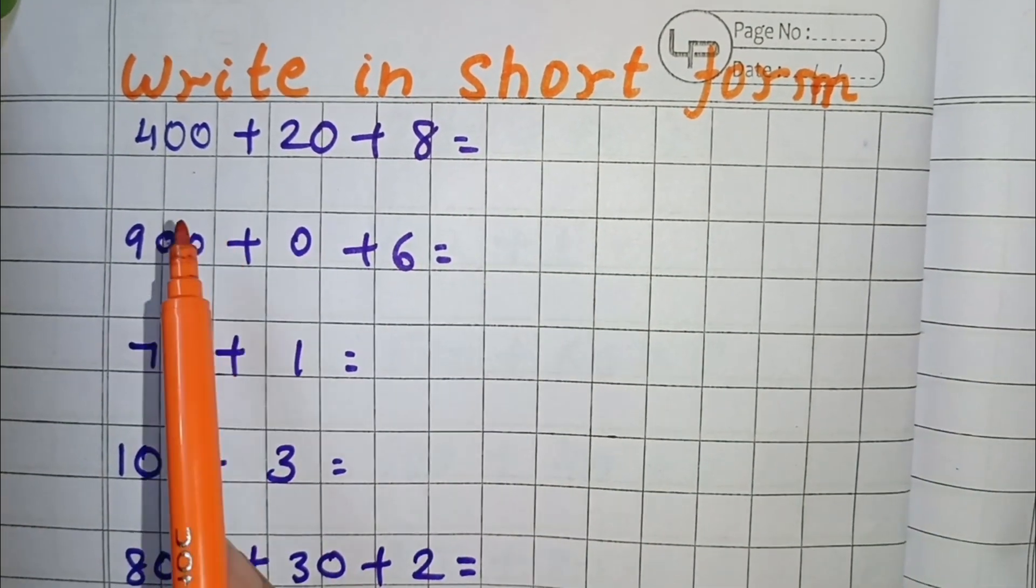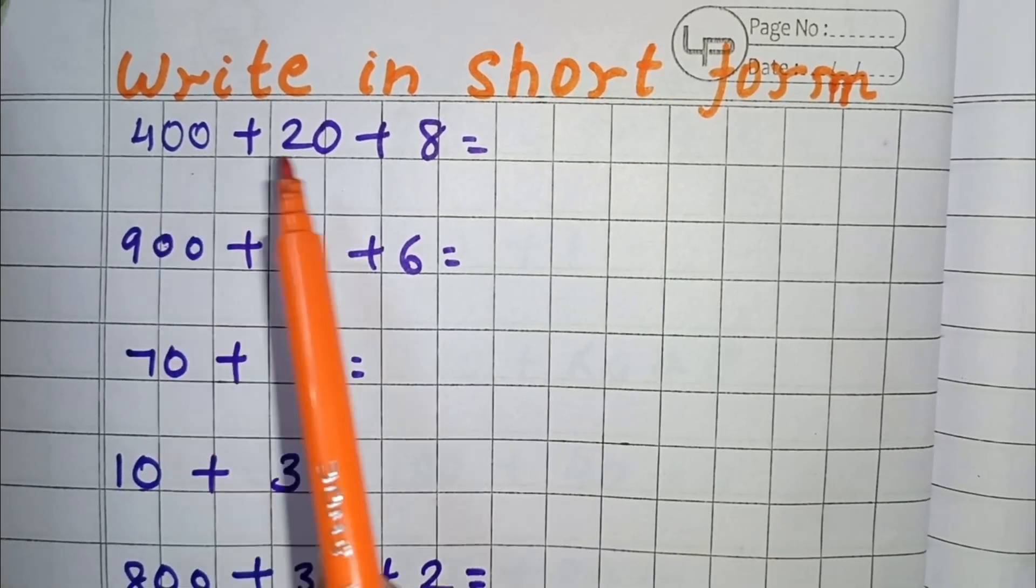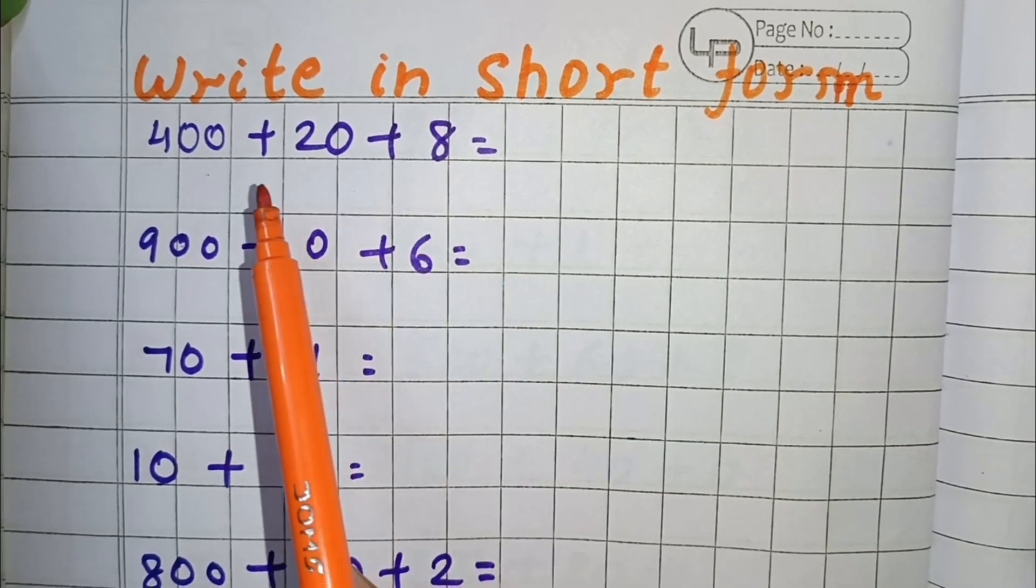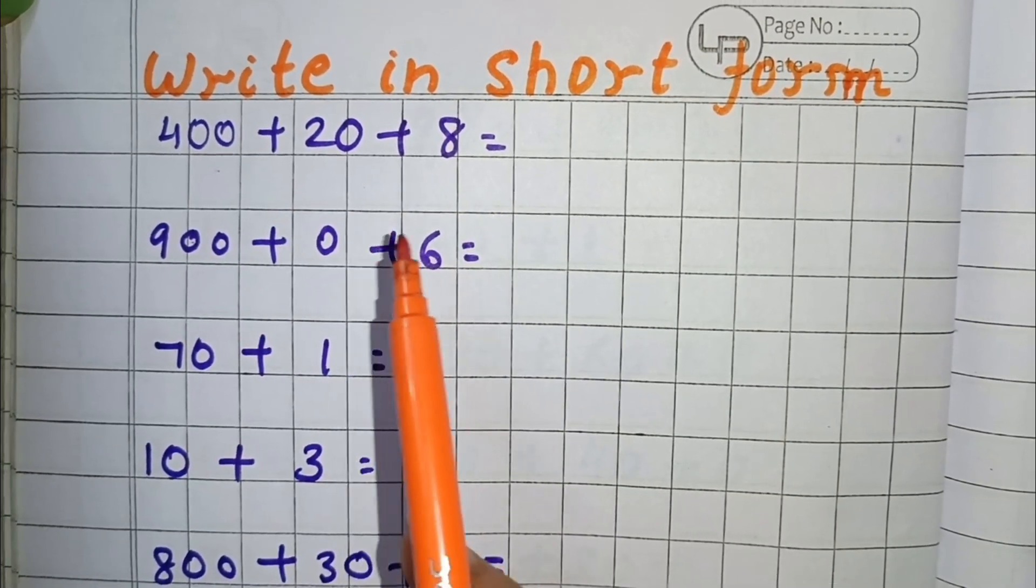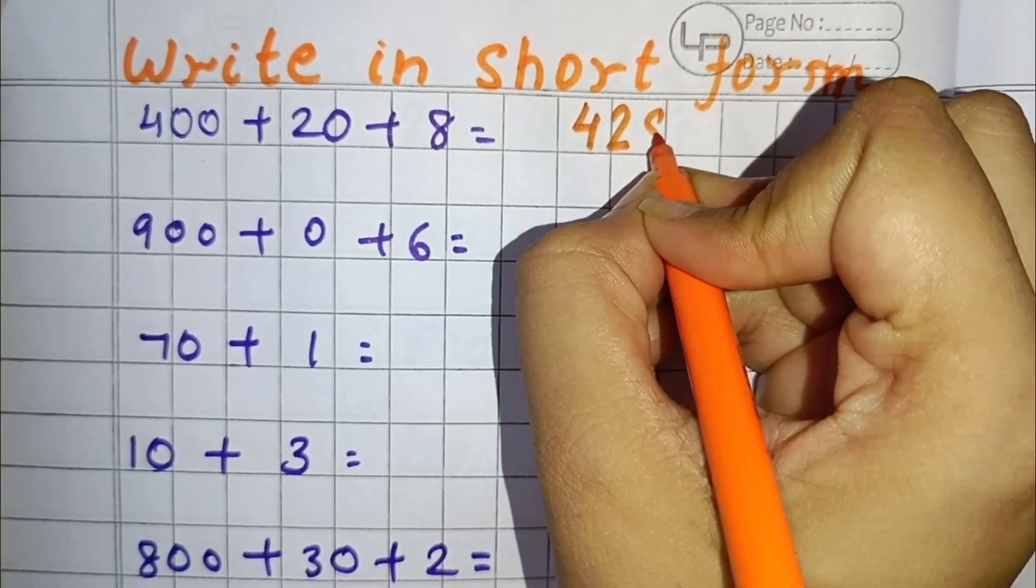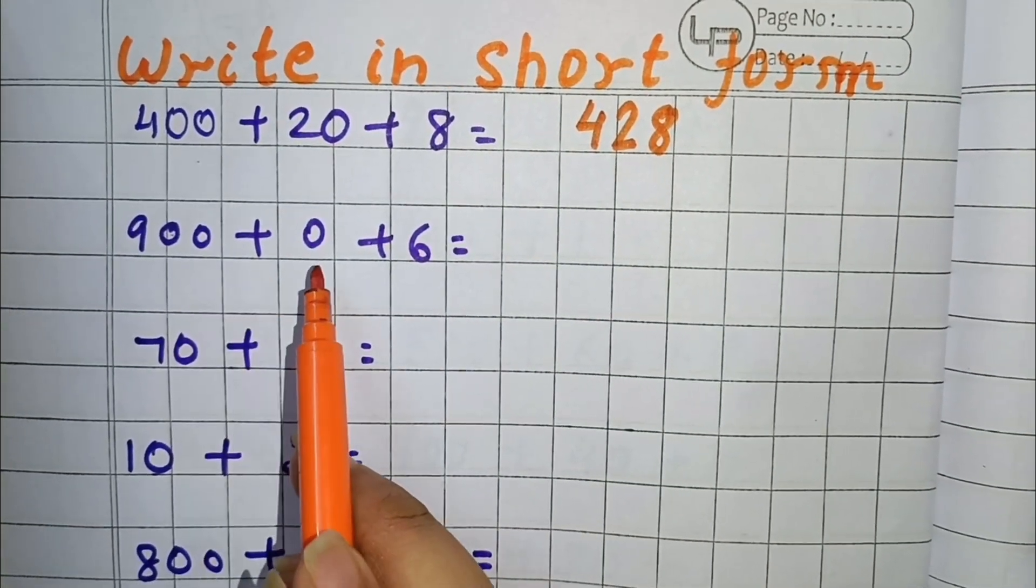Let's begin. You can see here are a few numbers like 400 plus 20 plus 8. If we have to write these numbers in short form, we can write 428.